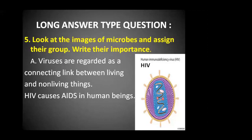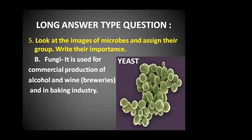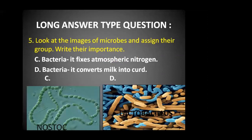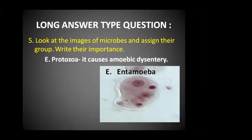Question number 5: look at the images of microbes and assign their group. Write their importance. The first image is HIV — it's a virus. HIV causes AIDS in human beings. Viruses are regarded as a connecting link between living and non-living things. The second image B is yeast, a type of fungus, used for commercial production of alcohol and wine in breweries and in bakeries. The C image is Nostoc, a type of bacteria that fixes atmospheric nitrogen. The D image is Lactobacillus, a type of bacteria which converts milk into curd. The E image is Entamoeba, a protozoa that causes amoebic dysentery.